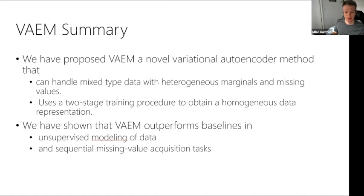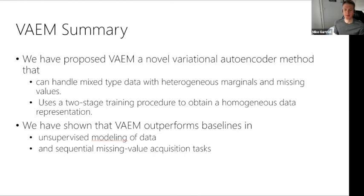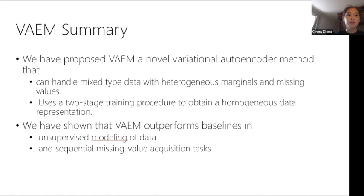With VAEM, because all dimensions are first mapped to a latent space, the second-stage VAE always uses a Gaussian likelihood when decoding from H to Z — the latent representation of X — so everything is in the same homogeneous space. Now, briefly, the last piece of work.